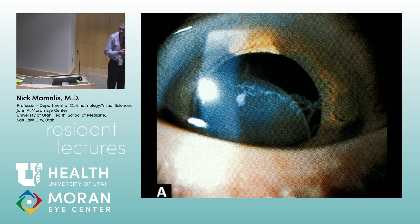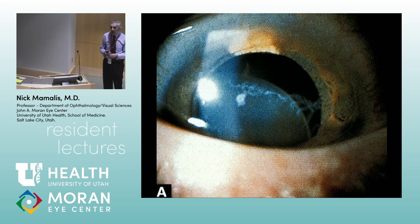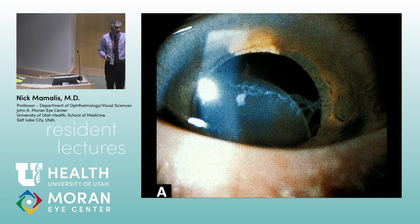What do we see in the other image? This looks like it's in an inferonasal subluxed position. Which entity is typically inferior nasal? Homocystinuria. That's a board question you really want to know: superior temporal is Marfan's, inferior nasal is homocystinuria. I don't know why, but that's what it is. Homocystinuria people can also be kind of tall and spindly, so the body habitus doesn't always help you discern them.